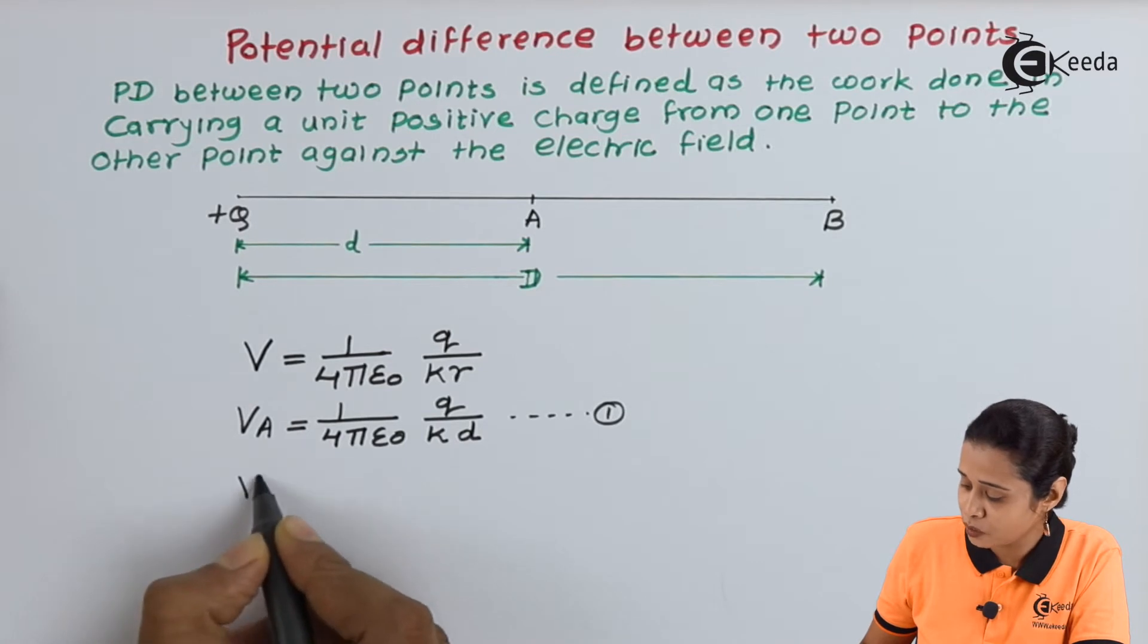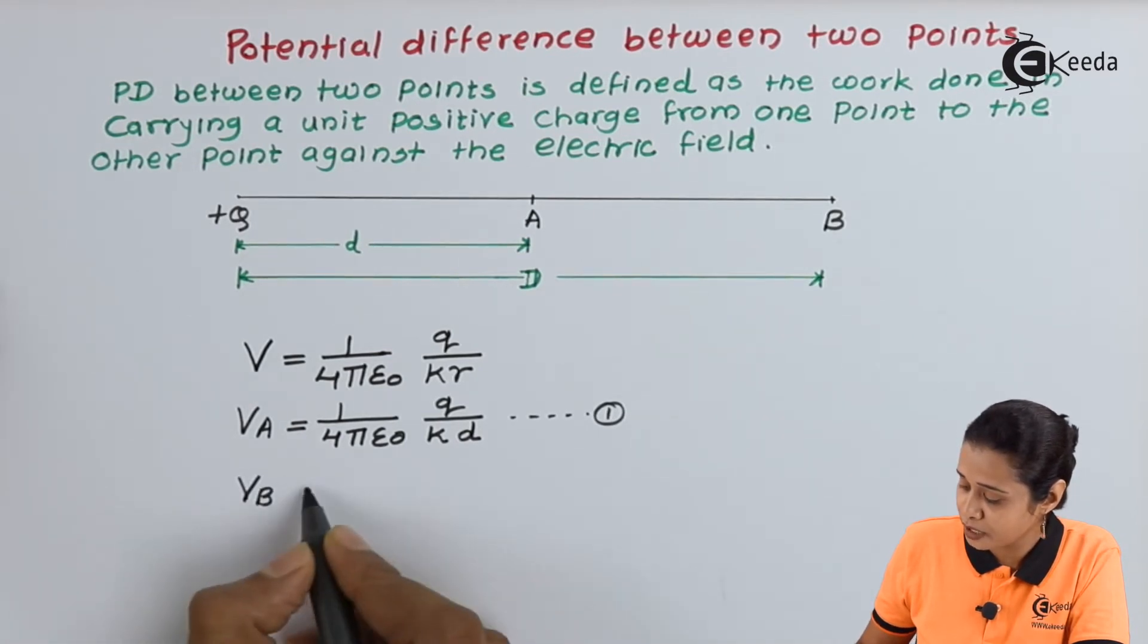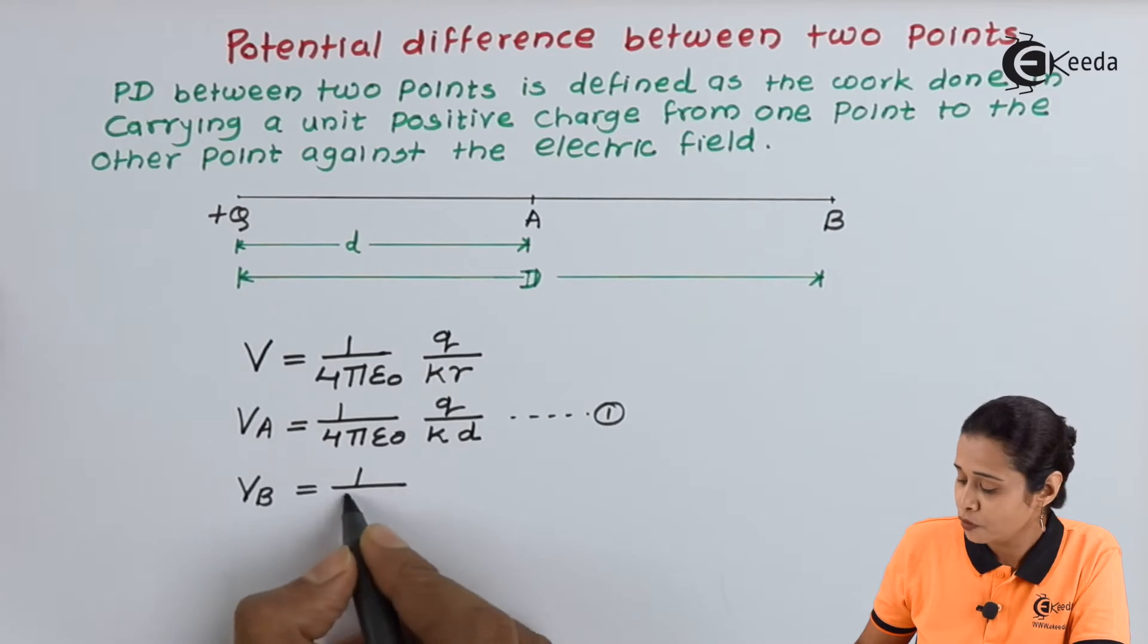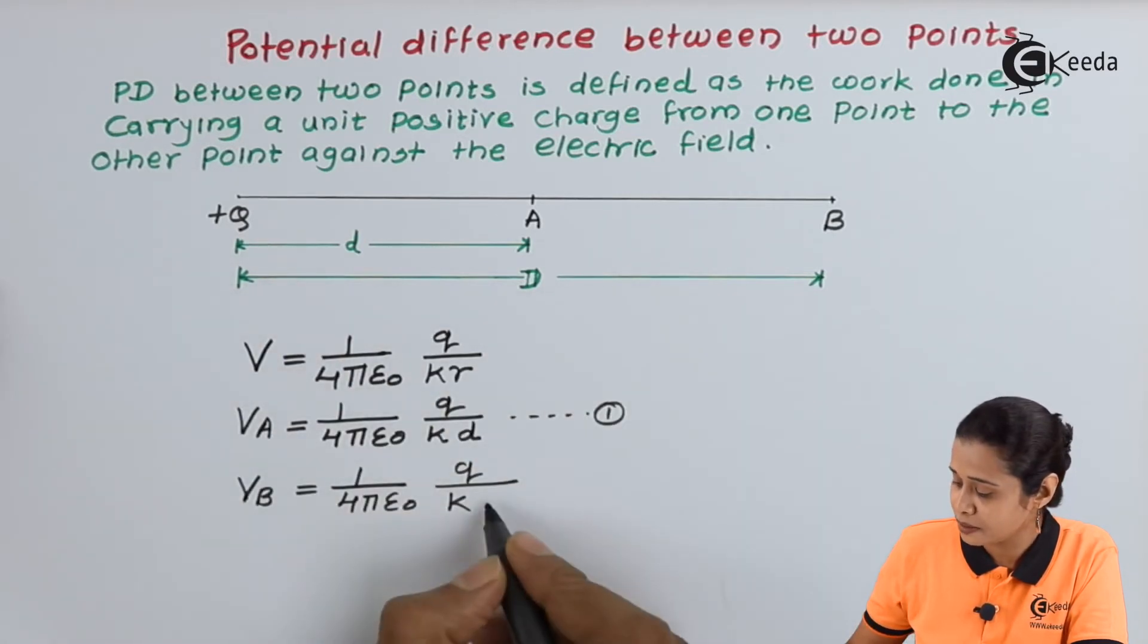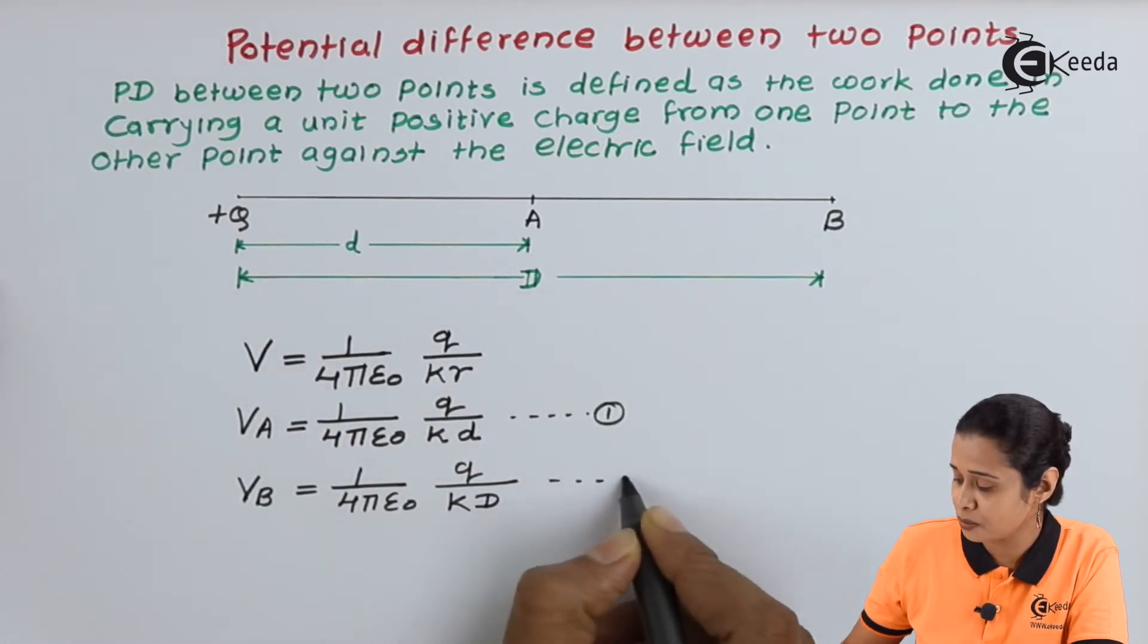Now we will find out potential at point B which is equal to 1 upon 4 pi epsilon naught, Q upon K times capital D. Here distance is capital D. This is equation number 2.